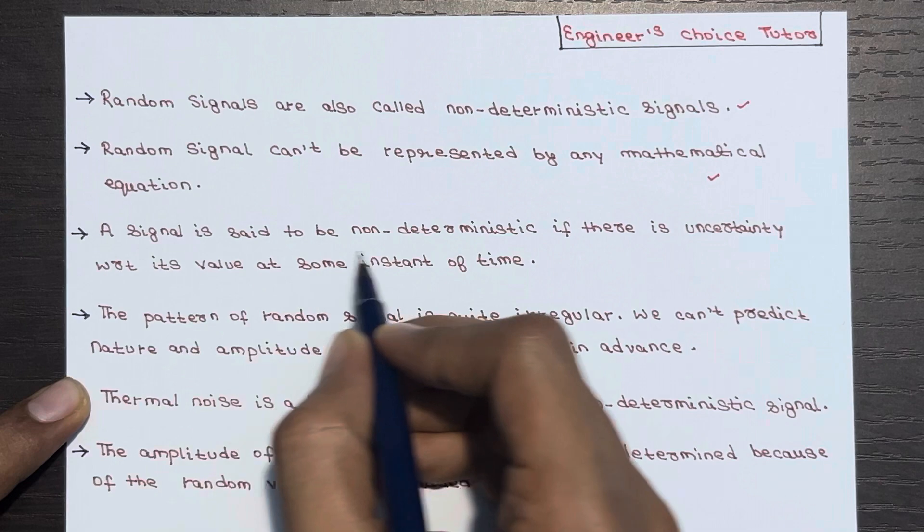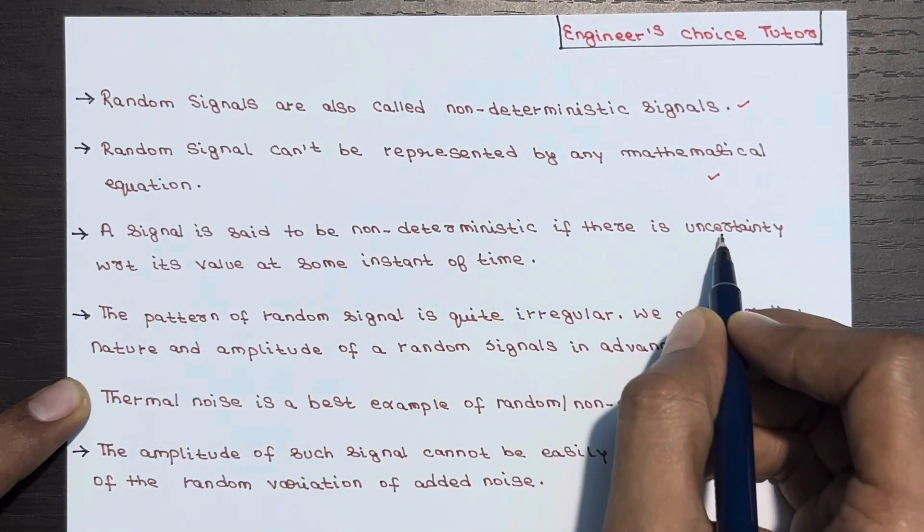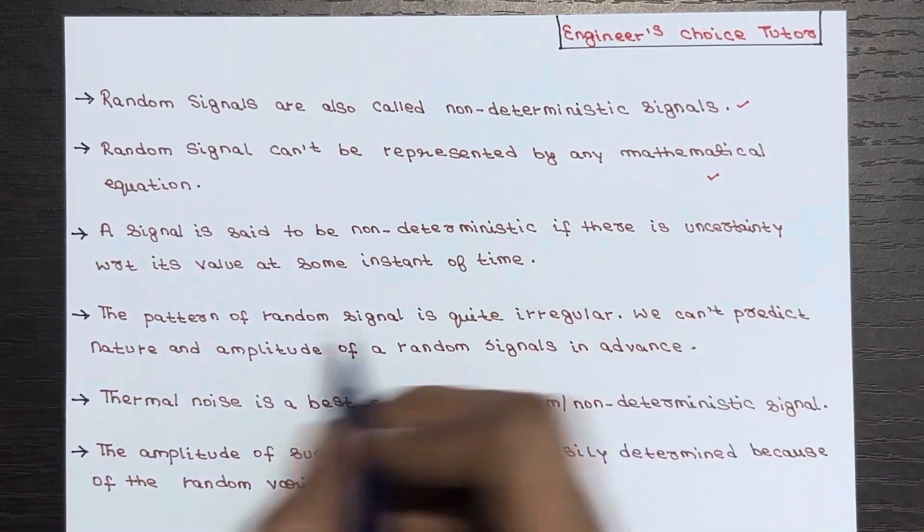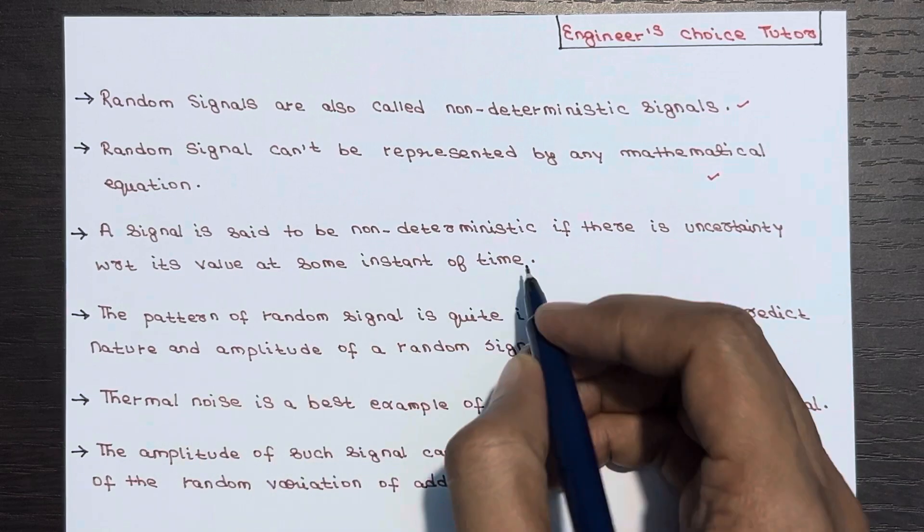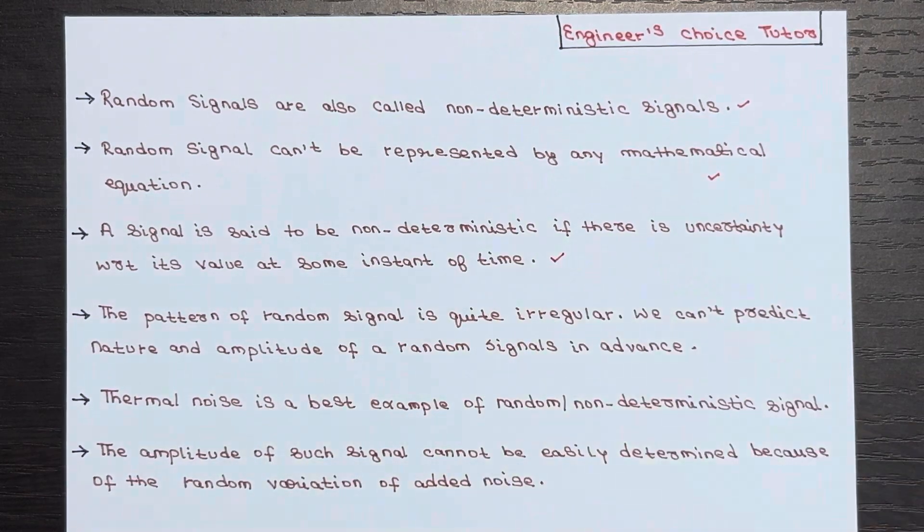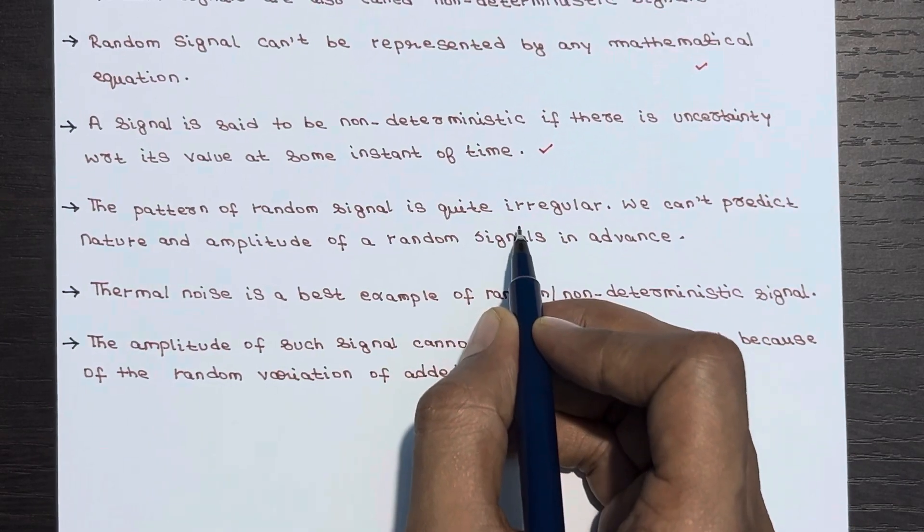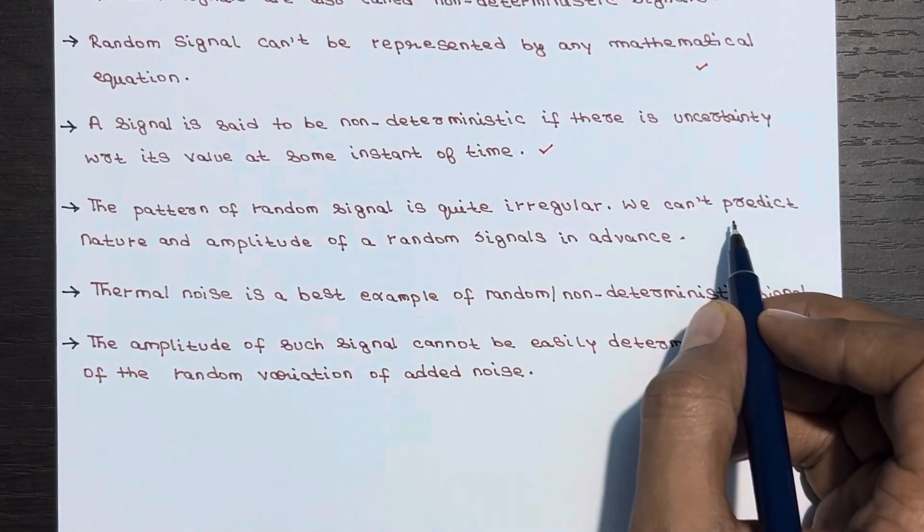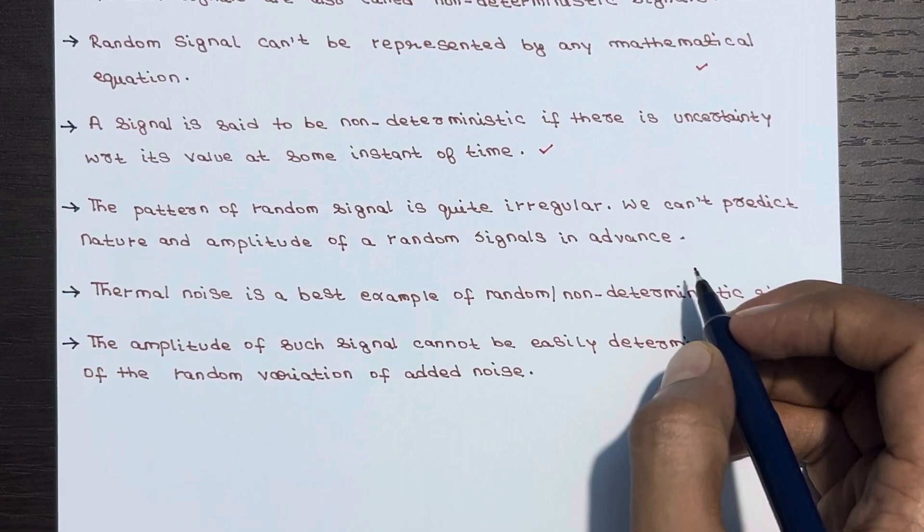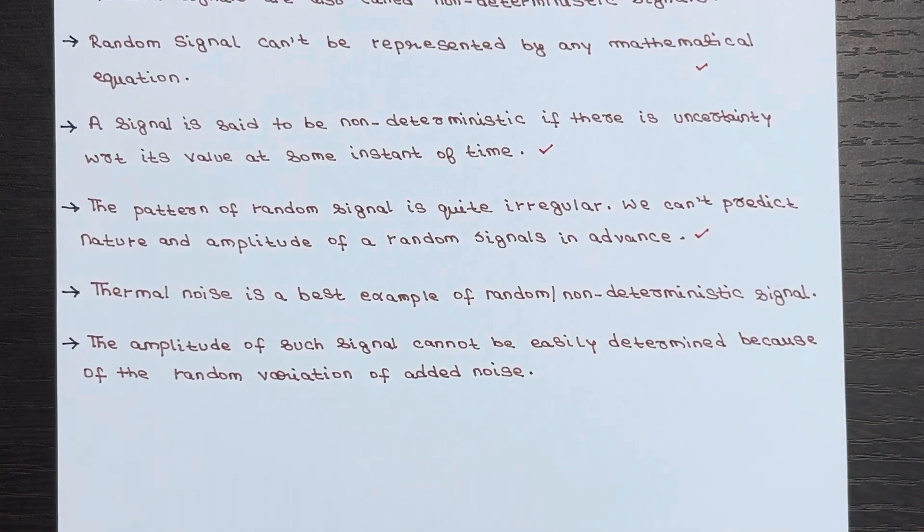A signal is said to be non-deterministic if there is uncertainty with respect to its value at some instant of time. The pattern of random signal is quite irregular, we can't predict nature and amplitude of a random signal in advance because of this irregularity.